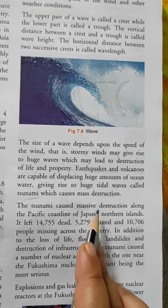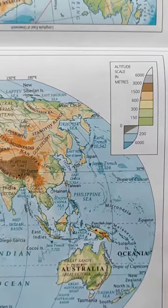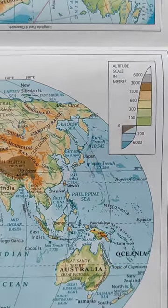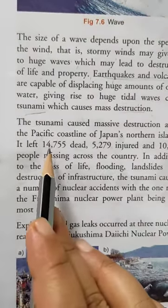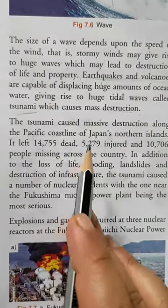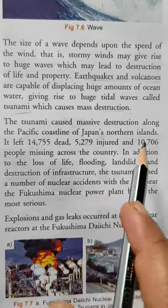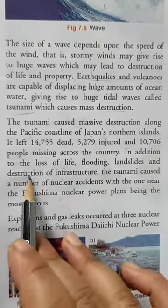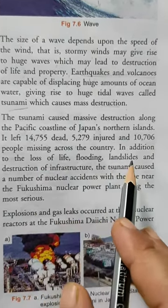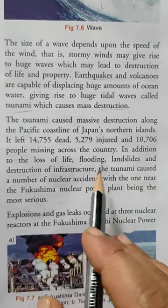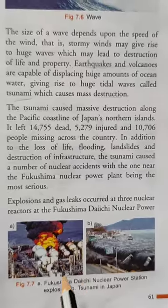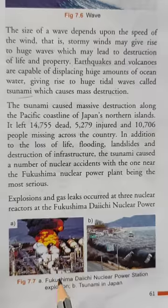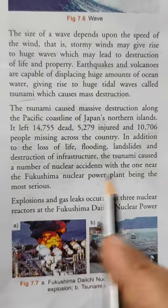The tsunami caused massive destruction along the Pacific coastline of Japan's northern islands. It left 14,755 dead, 5,279 injured, and 10,706 people missing across the country. In addition to the loss of life, flooding, landslides, and destruction of infrastructure occurred, along with a number of nuclear accidents, with one near the Fukushima nuclear power plant being the most serious.